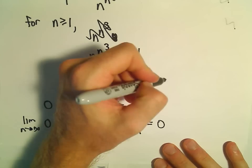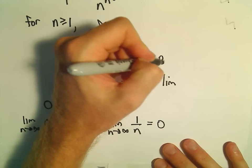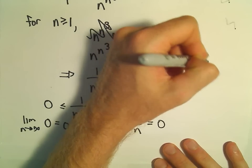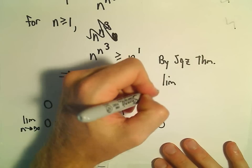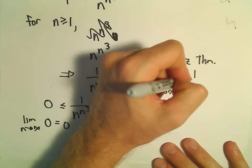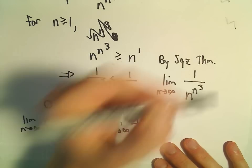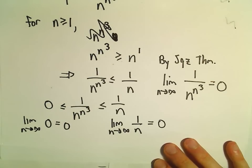So what this tells us is that by the squeeze theorem, the limit as n goes to infinity of 1 over n raised to n to the third must also equal 0.